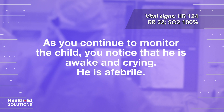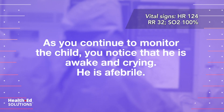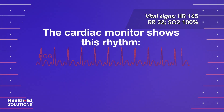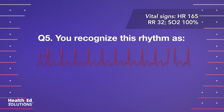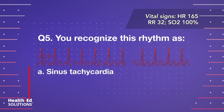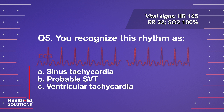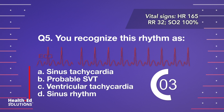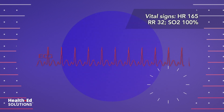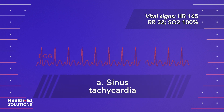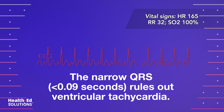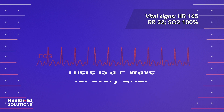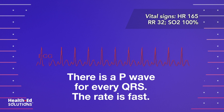As you continue to monitor the child, you notice that he is awake and crying. He is afebrile. The cardiac monitor shows a rhythm. Question 5: You recognize this rhythm as: A) sinus tachycardia; B) probable SVT; C) ventricular tachycardia; D) sinus rhythm. Correct answer A — sinus tachycardia. The narrow QRS, less than 0.09 seconds, rules out ventricular tachycardia. There is a P-wave for every QRS. The rate is fast.